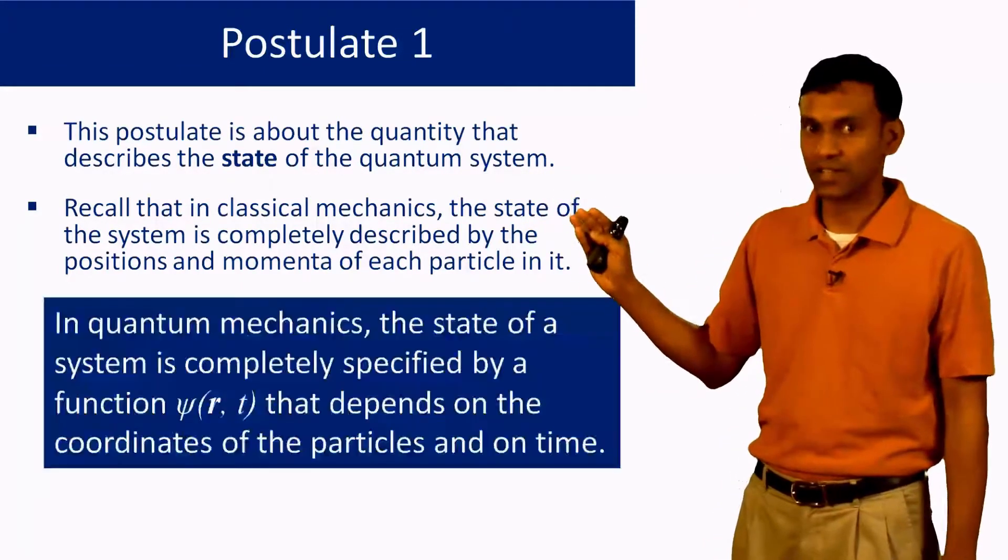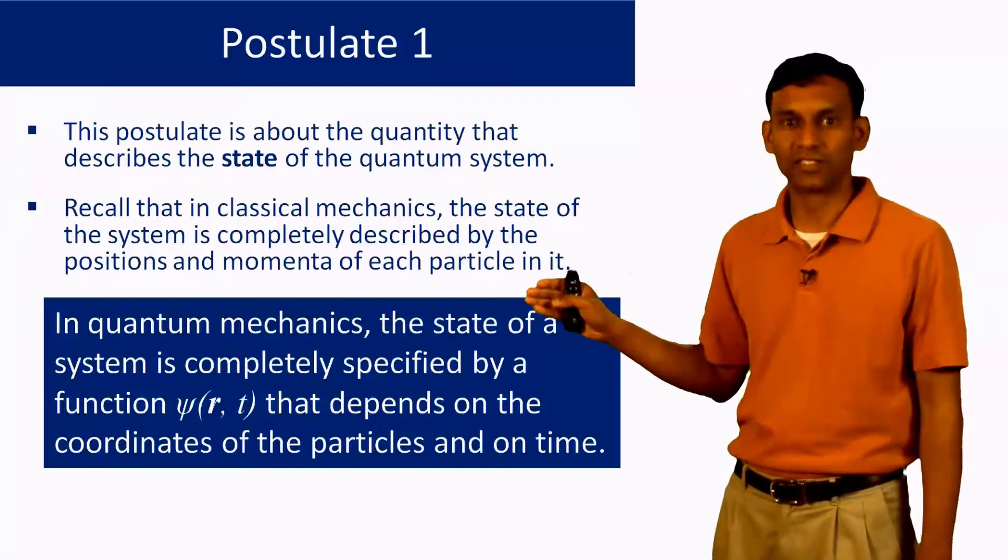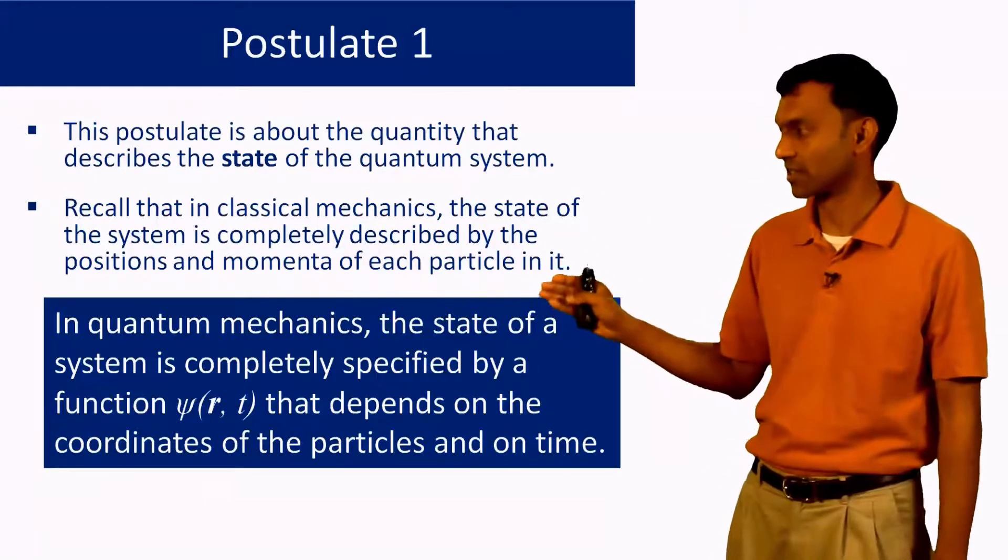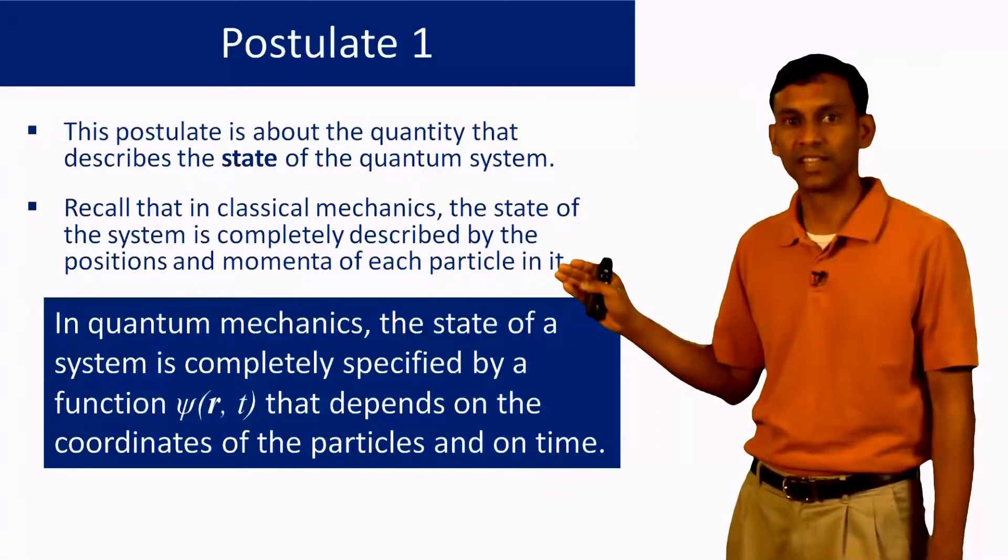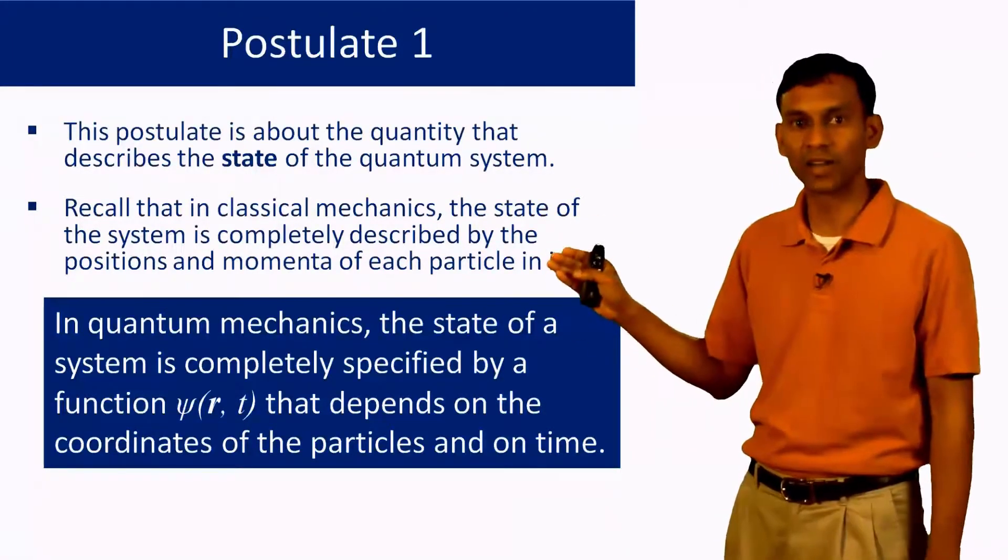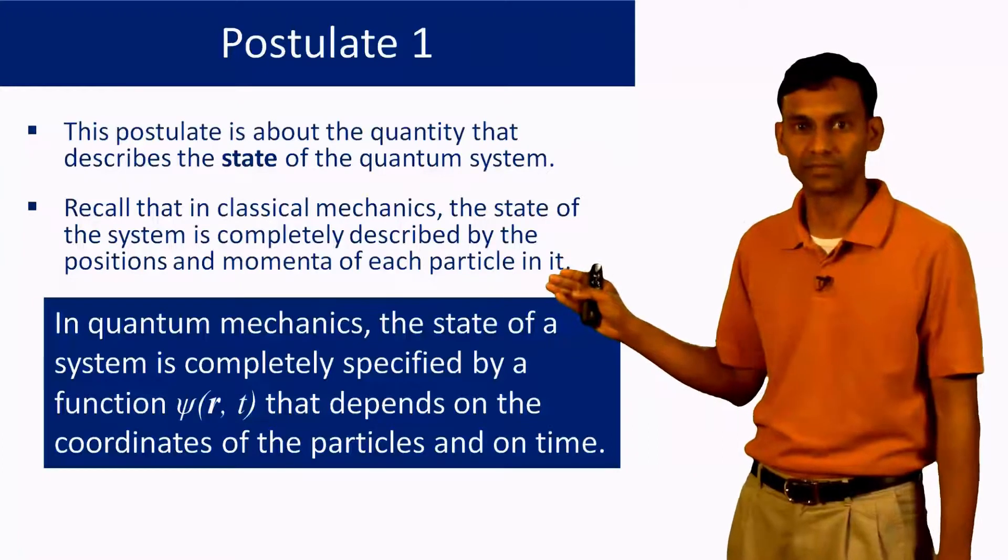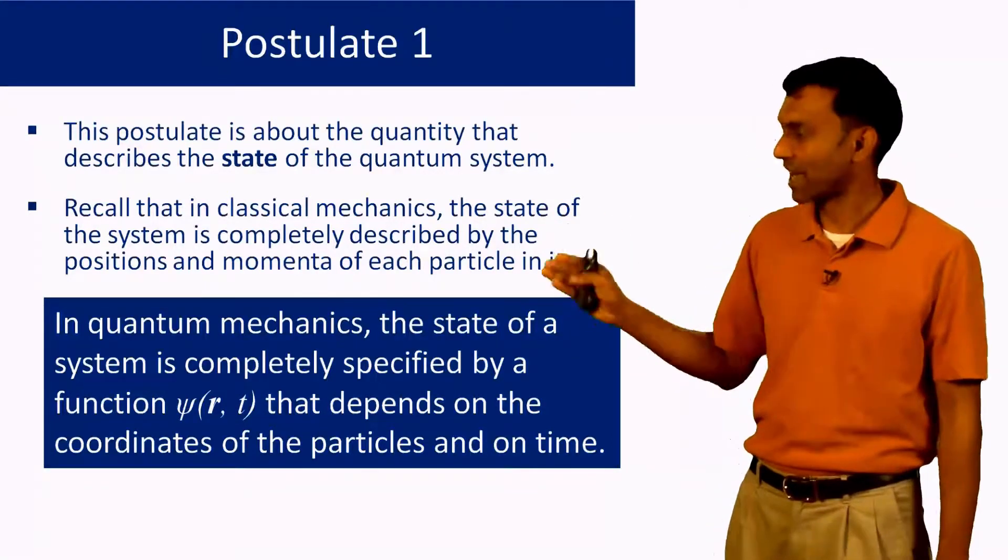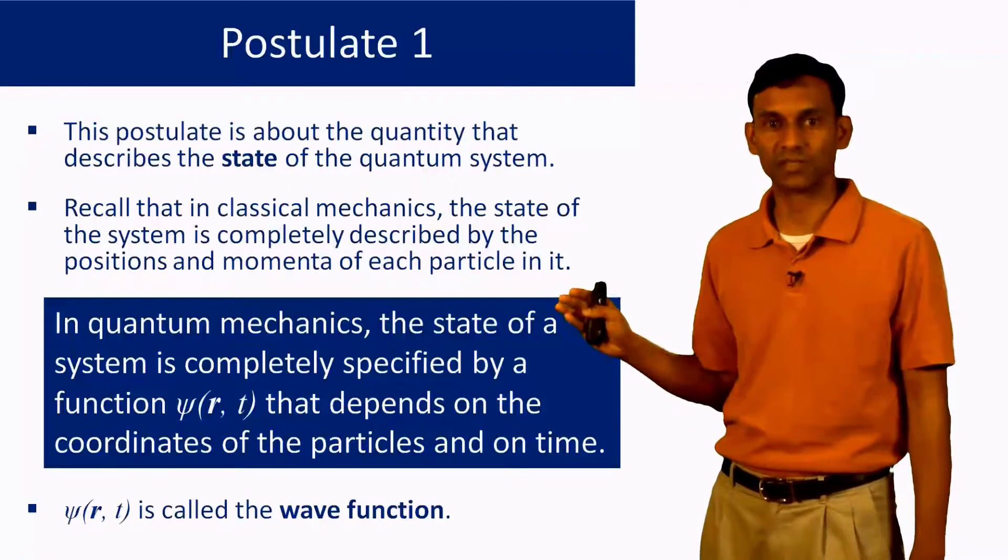In contrast, the state of a quantum mechanical system is completely specified by a function ψ(r,t) that depends on the coordinates r of the particles and on time t. This ψ(r,t) is called the wave function of the system.